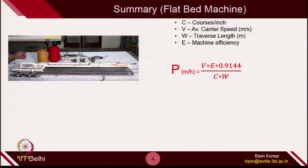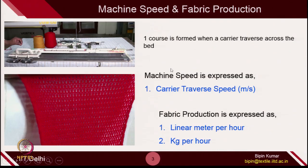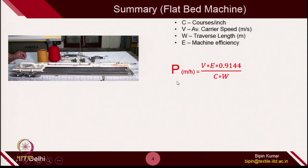In flat knitting machines, speed is expressed as carrier traverse speed, because it is the carrier which traverses on the machine from left to right and right to left. We should know the carrier traverse speed, and then we can express fabric production similar to circular machines as linear meter per hour or kg per hour. The production on a flat bed machine equals velocity of the carrier (V), efficiency (E), courses per inch (C), and traverse length (W).